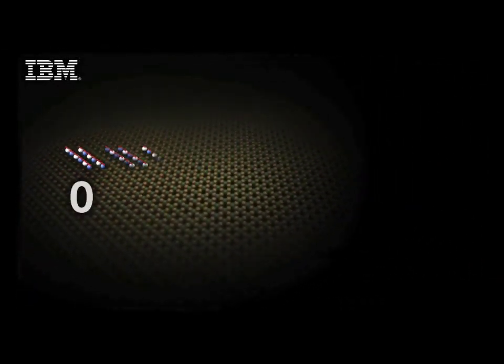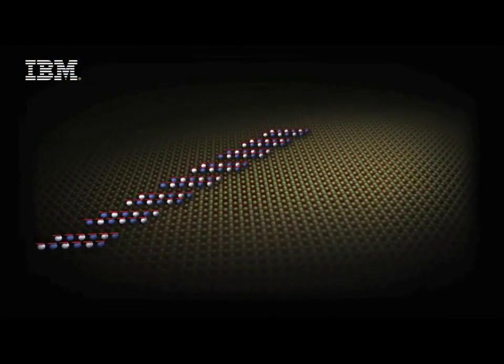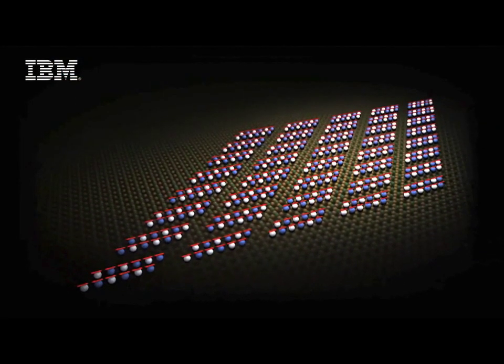Now we're zooming out from the single bit to eight bits, which makes one byte, which is the next bigger unit of information in a computer. A byte, for example, can store all the characters that you have in the alphabet and all the numbers that go with it. If we zoom out further, then you can see that we can put many of these bytes next to each other.